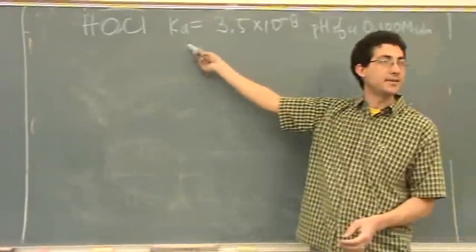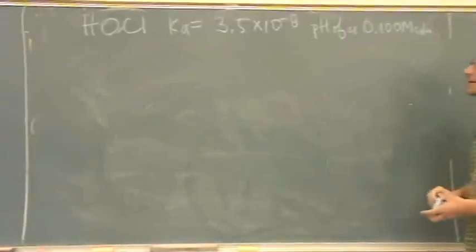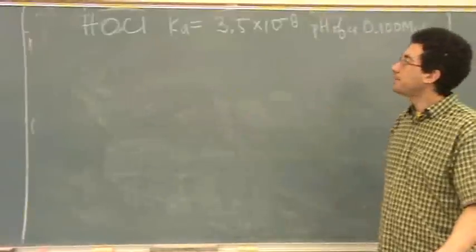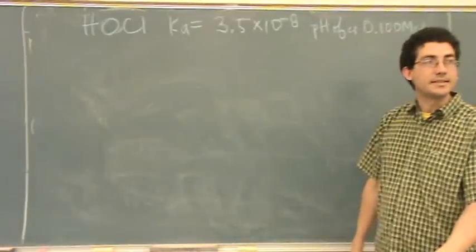Ka, that's why we wrote Ka here, not Kb. You actually saw this in Chem 2A. This would be hypochlorous acid.